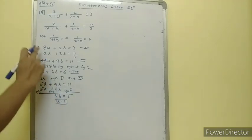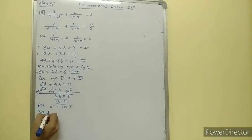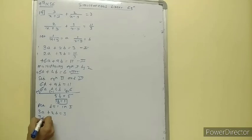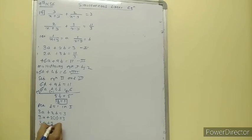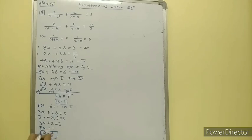Now we substitute the value of b in the first equation. Put b equal to 1 in the first equation: 3a plus 2b is equal to 3. So we have 3a plus 2 into 1 is equal to 3. We have 3a plus 2 is equal to 3; that 2 will go to that side. So 3a is equal to 3 minus 2 is 1. So a is equal to 1 upon 3.